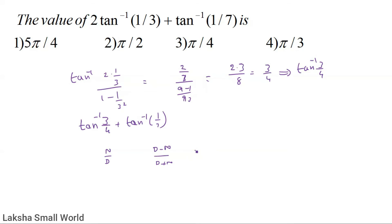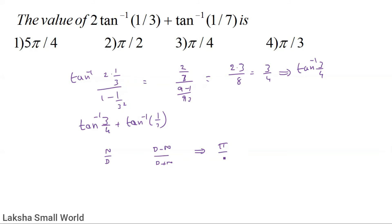Simplifying, the result is tan⁻¹(1) = π/4. So the answer is π/4. The third option is correct.